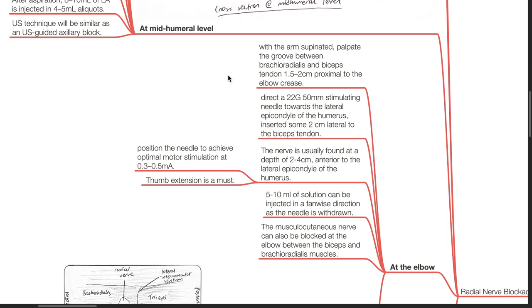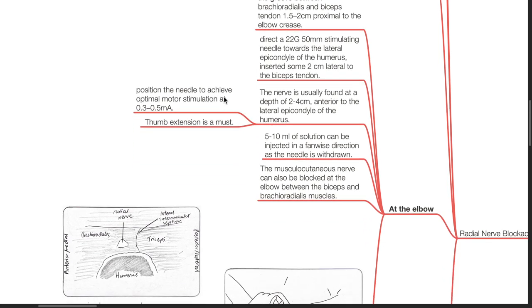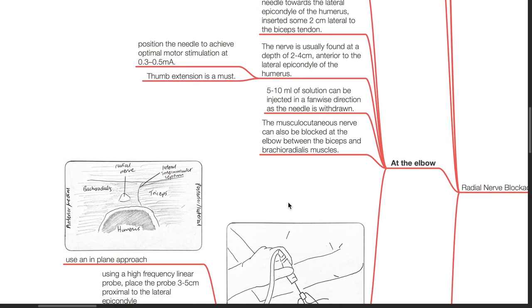The nerve is usually found at a depth of 2 to 4 cm anterior to the lateral epicondyle of the humerus. Position the needle to achieve optimal motor stimulation at 0.3 to 0.5 mA. Thumb extension is a must. 5 to 10 mL of LA can be injected in a fan-wise direction as the needle is withdrawn. The musculocutaneous nerve can also be blocked at the elbow between the biceps and the brachioradialis.